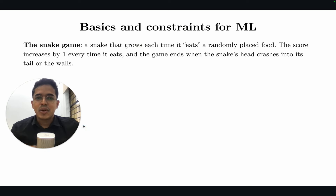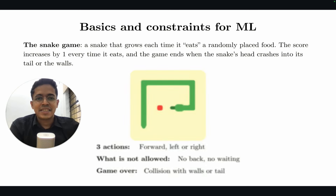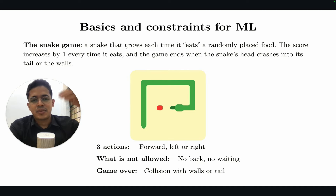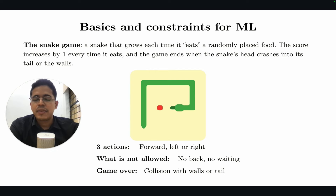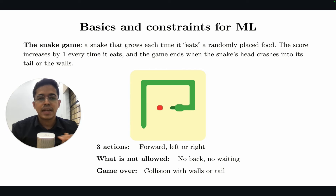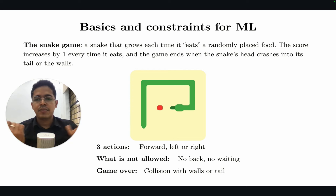You know how the snake game works. We have a snake that grows each time it eats a randomly placed food. When it eats the food, the food disappears and shows up elsewhere. The length of the snake increases by one. If the snake hits the walls or its own tail, it will die — game over. We will define three actions for the snake: forward motion, left, or right.